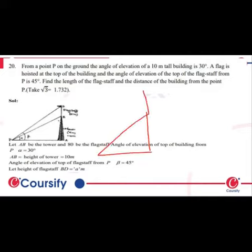We have two types of triangles. Here is the angle of elevation and this is the height of the flag. This triangle represents the full height including the flag.